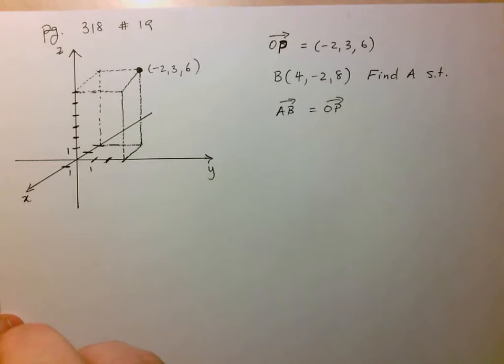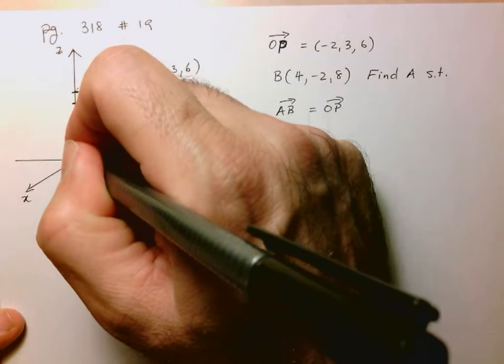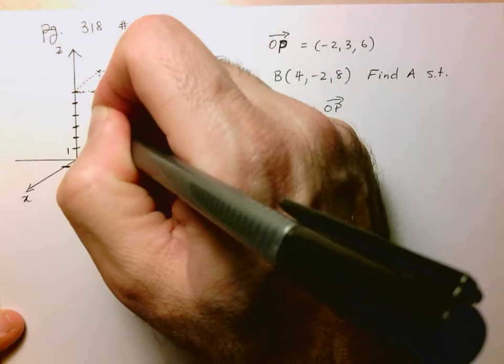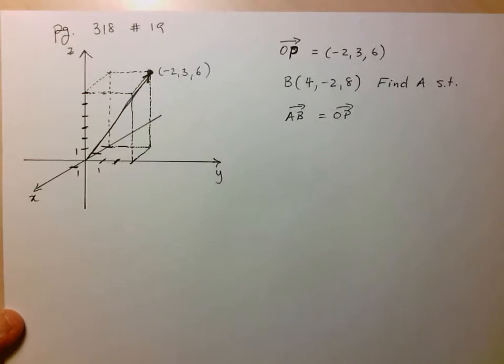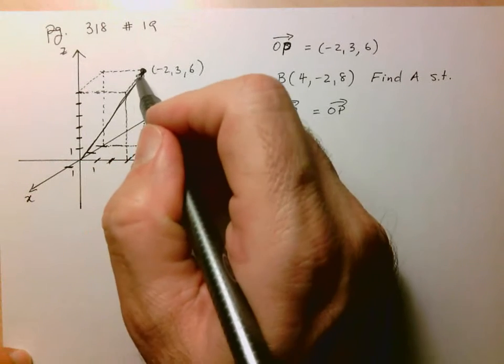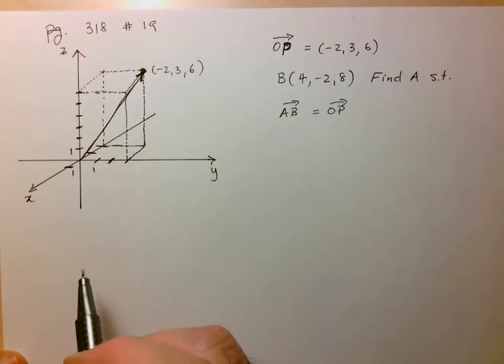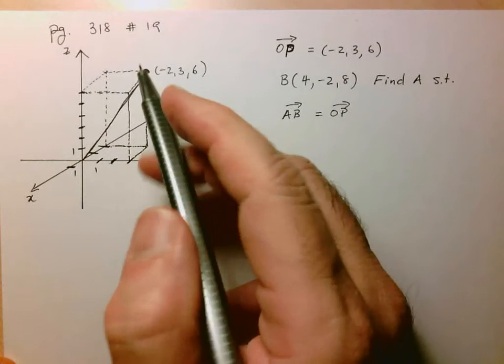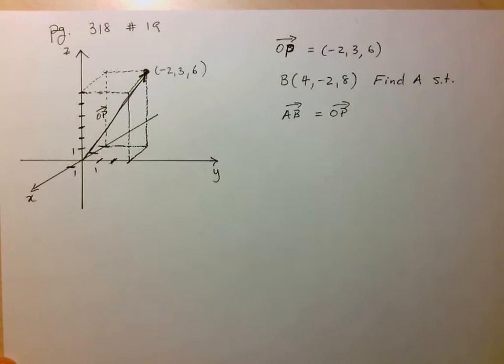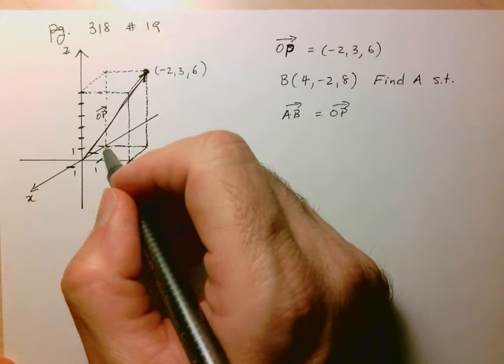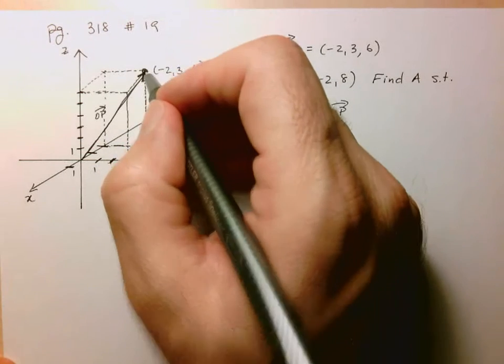And so the vector would be going from the origin to that point. A little off, but that'll do. So again, this really demonstrates just how awful it is to draw these points in these vectors. So essentially this vector is just the diagonal of this rectangular prism. So let's go over how we achieved this particular vector, which would be my vector OP. So this vector was achieved by going negative 2 units in the X direction, 3 units in the Y direction, and 6 units up in the Z direction.